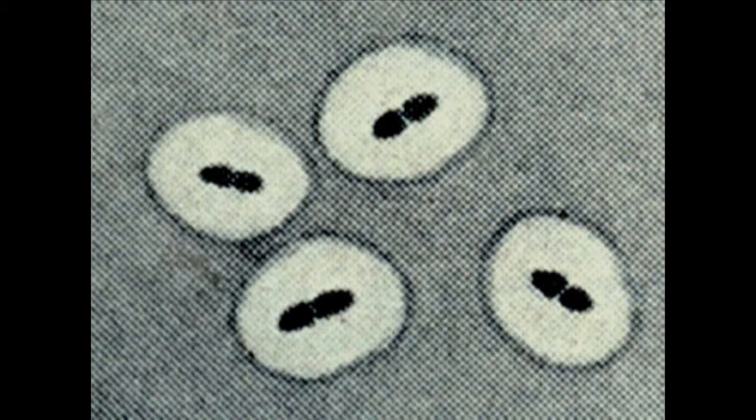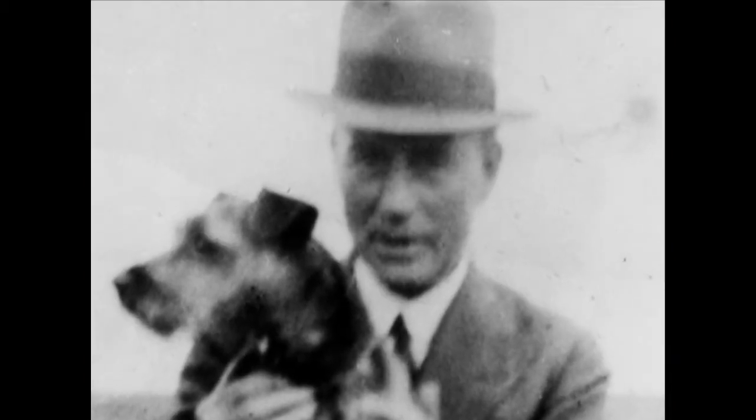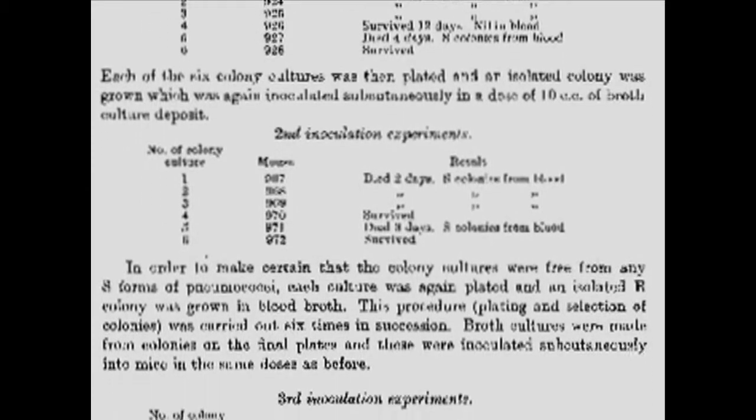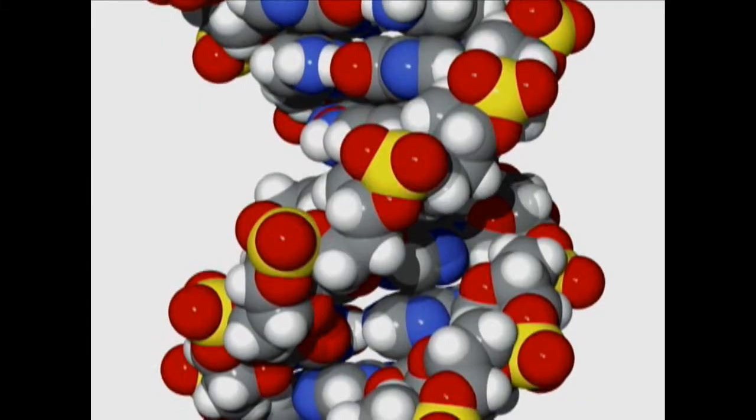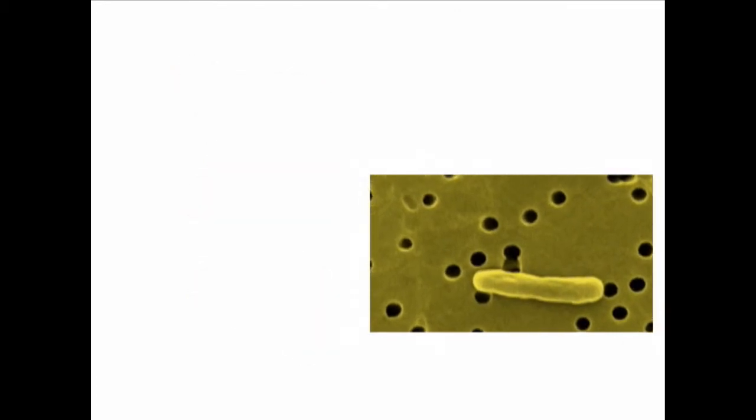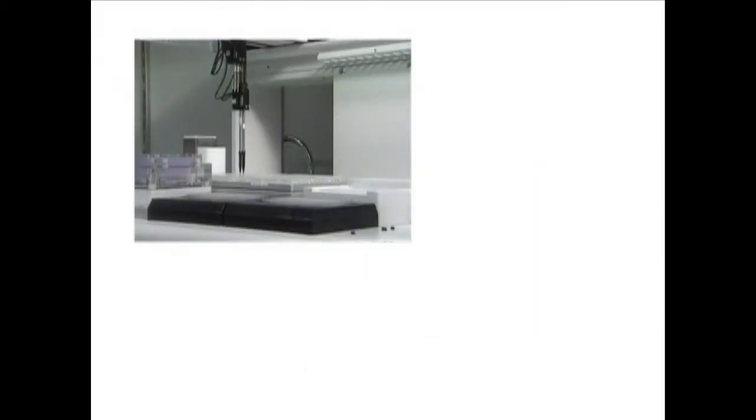Somehow, a substance from the dead smooth cells had been absorbed by some rough bacteria and turned them into the deadly smooth strain. Griffith failed to produce a vaccine, but he had stumbled upon the principle of transformation, a discovery that led to the identification of DNA as the molecule of heredity and a property of bacteria that is now of central importance to molecular biology and medicine.